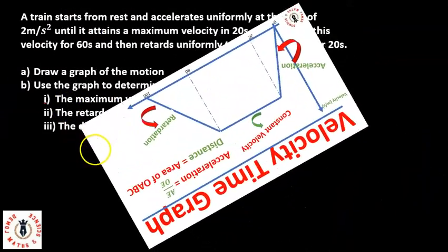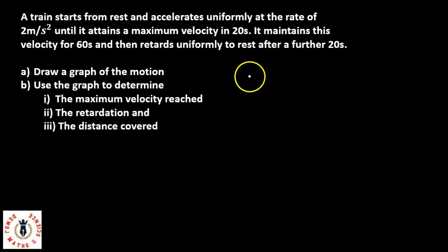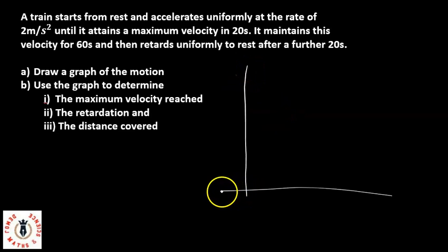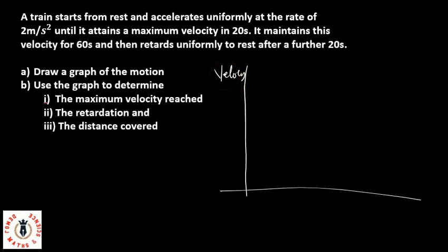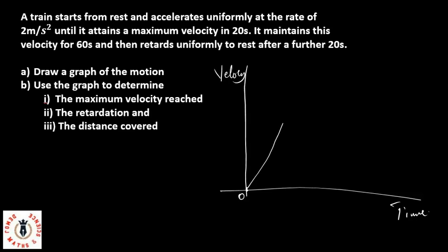Our first example says that a train starts from rest and accelerates uniformly at the rate of 2 meters per second squared. Let's do a sketch of the velocity-time graph. We have velocity on the y-axis and time on the x-axis. Where both meet, let's call this our initial point at zero. The train starts from rest, meaning the velocity at time zero is zero — starting from (0, 0). It accelerates uniformly at 2 meters per second squared until it attains a maximum velocity in 20 seconds.